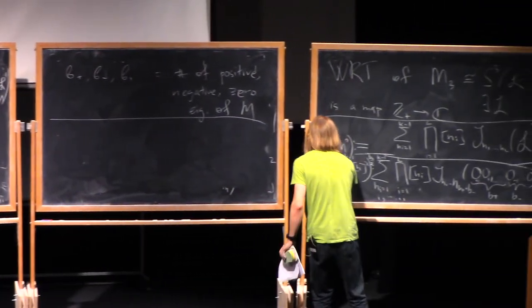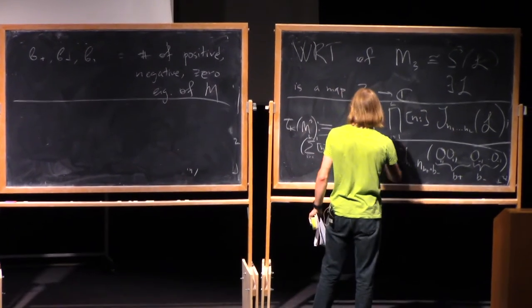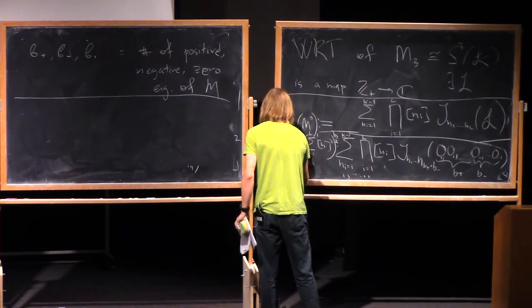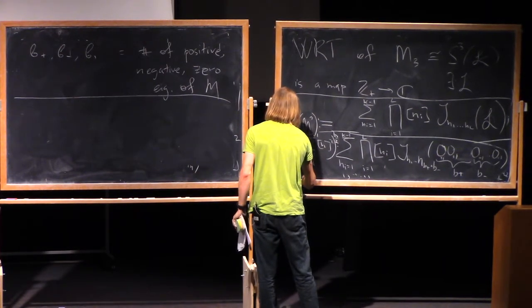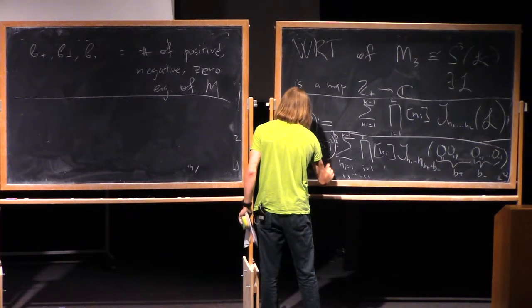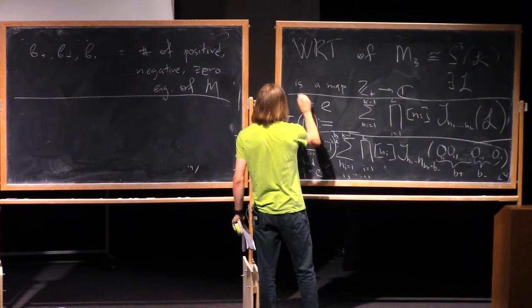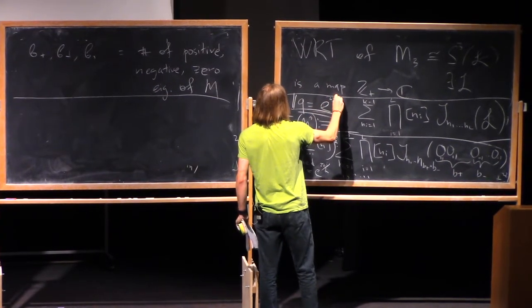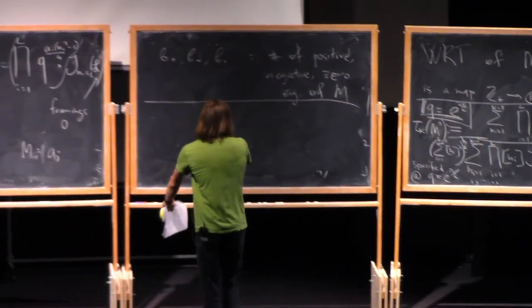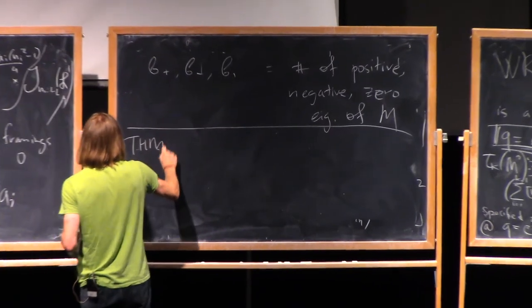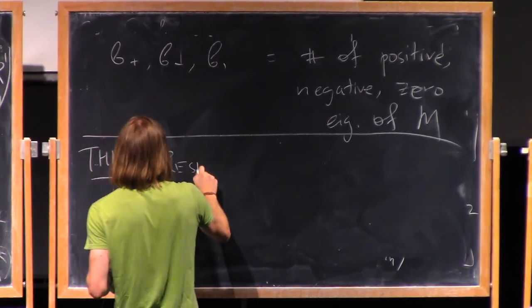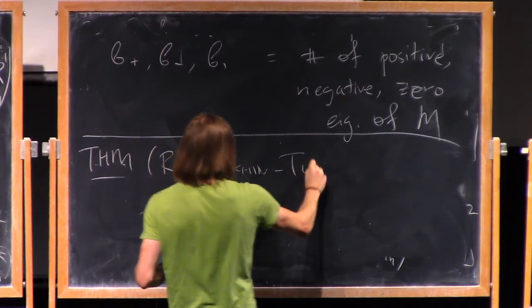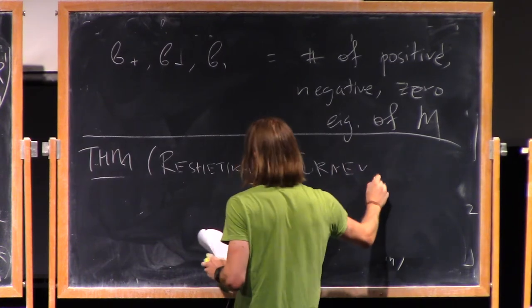And I also want to introduce another normalization factor, which will depend on B one, which is, sorry, I just take a sum from one to K minus one of a quantum number n squared and take it to the power of B one divided by two. And I specify this whole thing at q equals e to 2 pi i divided by k.